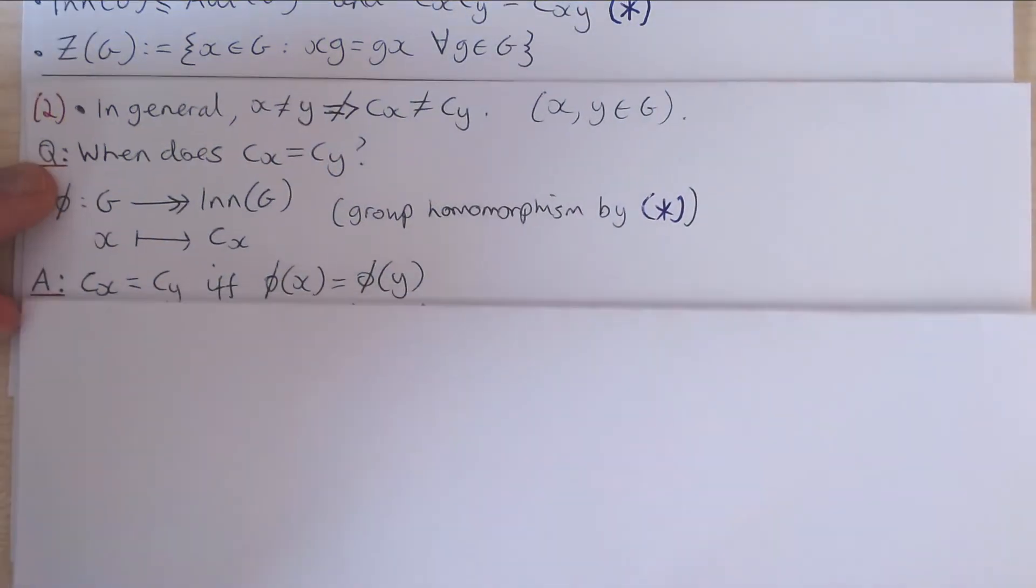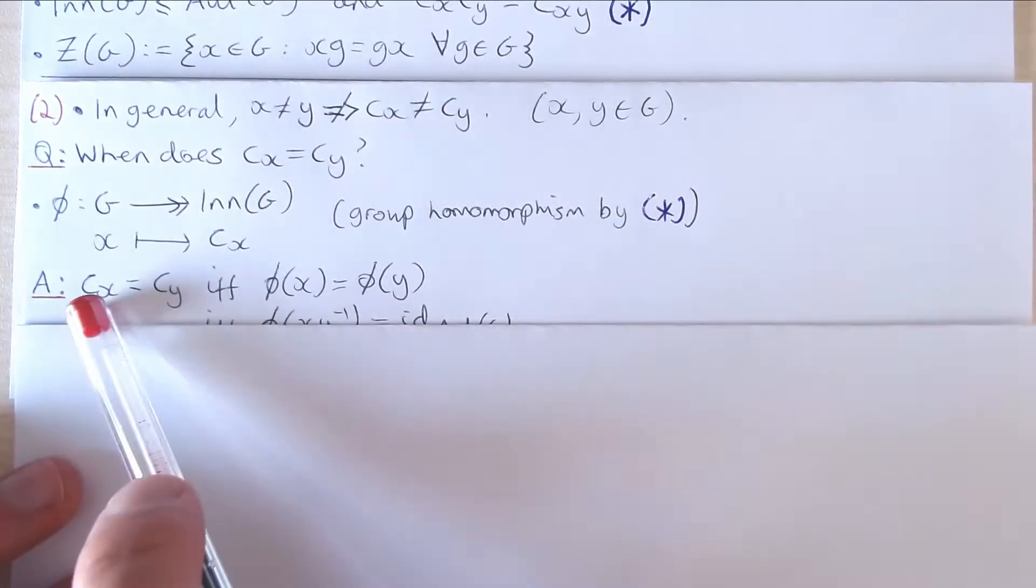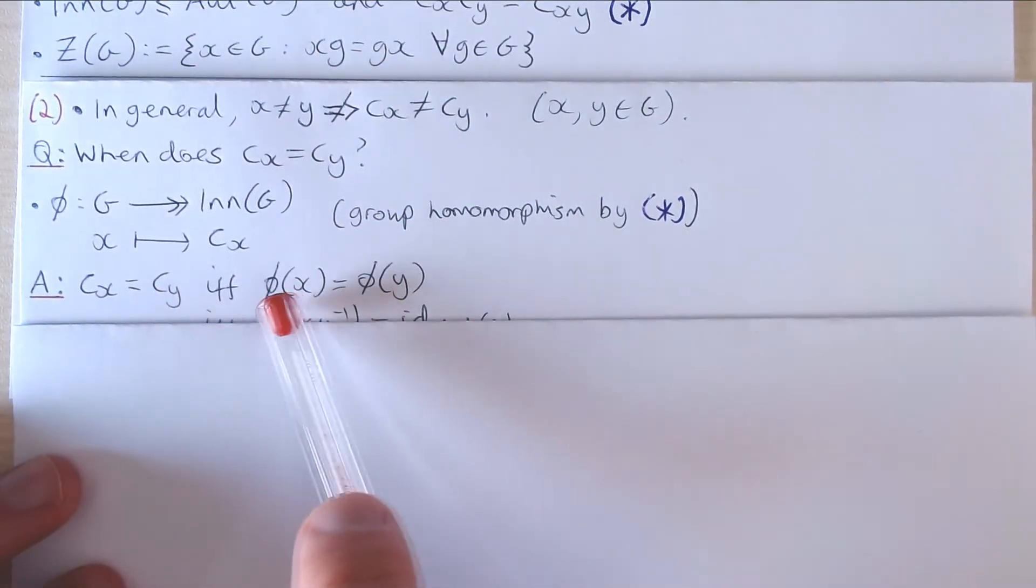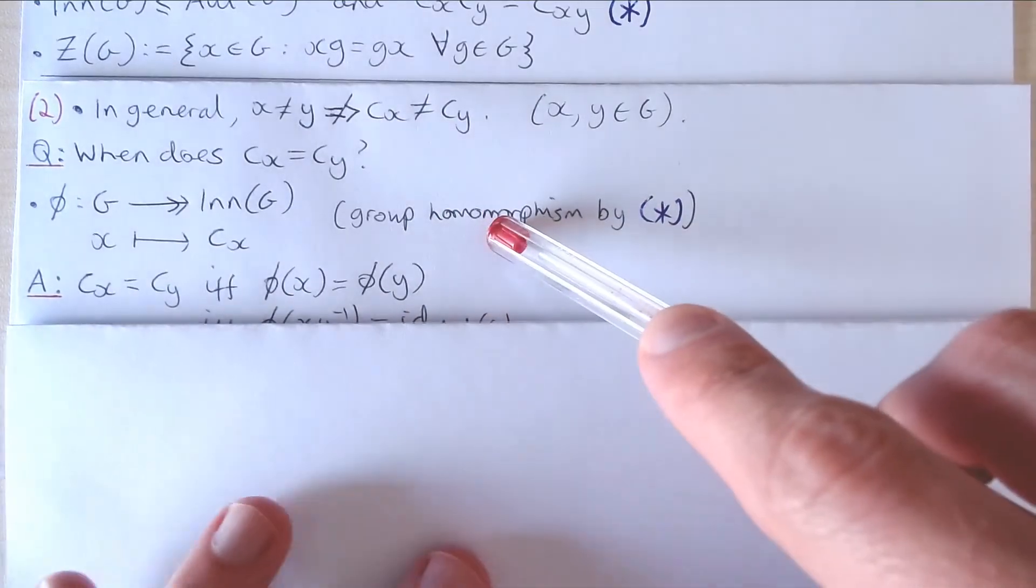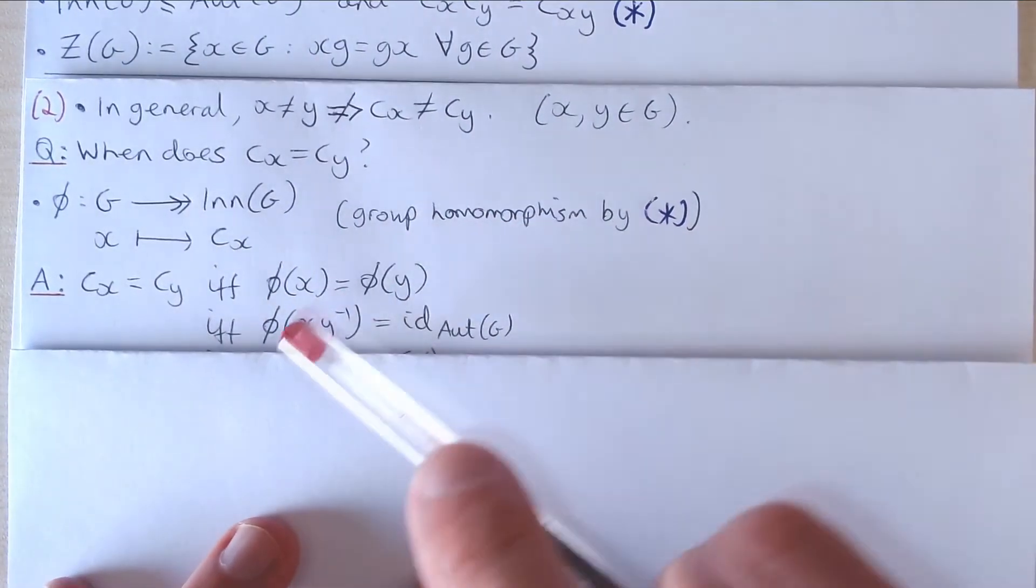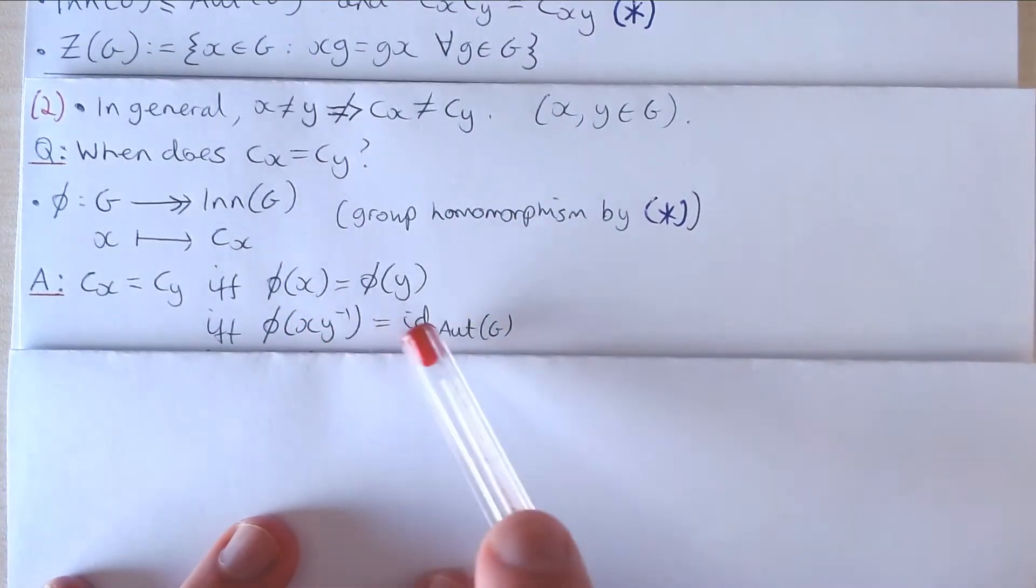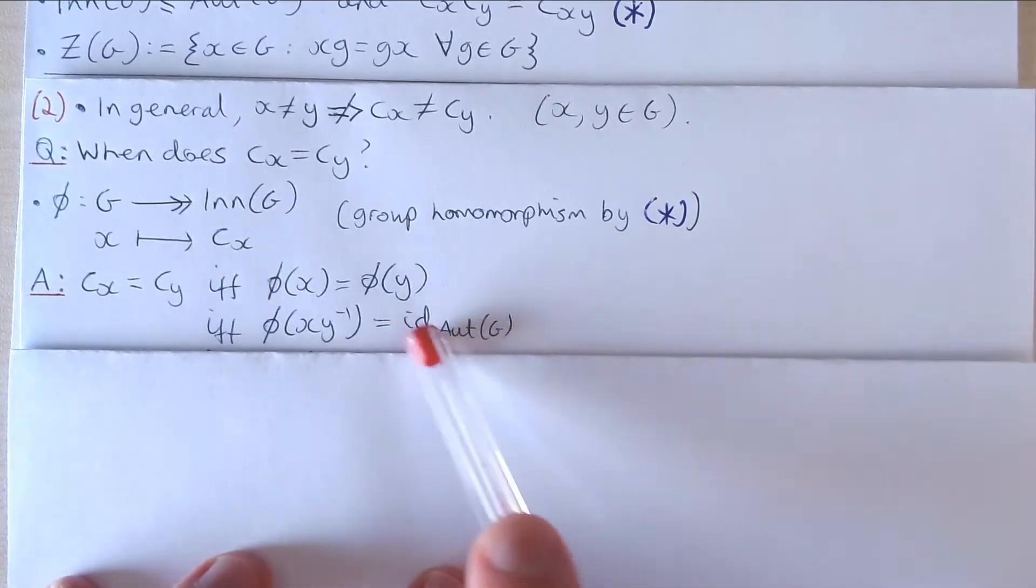Then under this map phi, cx equals cy if and only if phi of x equals phi of y, and that holds if and only if phi of xy inverse is equal to the identity automorphism on G.